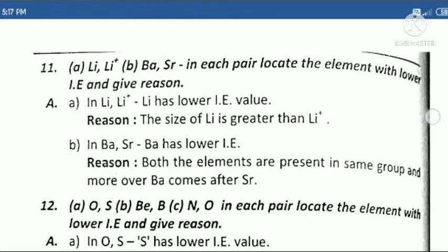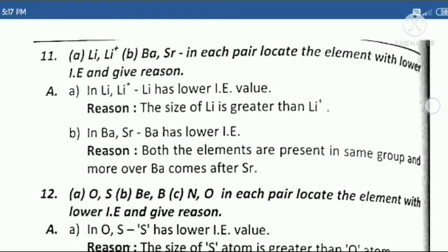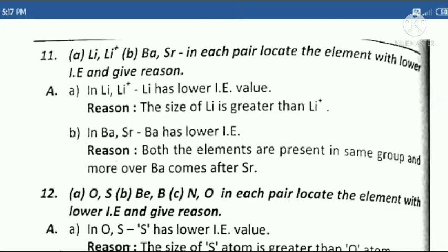Eleventh question: A. Li and Li⁺, B. Ba and Sr — in each pair locate the element with lower IE and give reason.